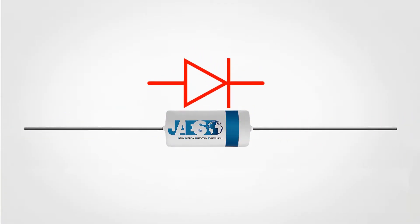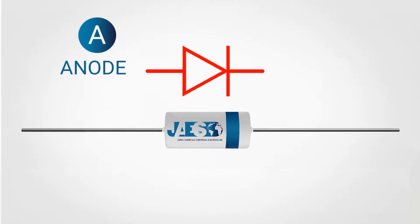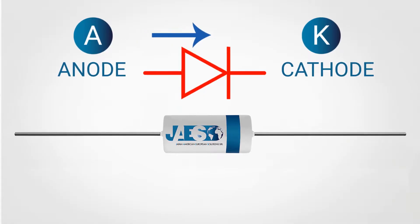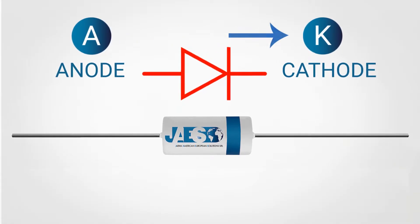The two diode terminals are called anode and cathode. The electric current conventionally goes from the anode to the cathode following this direction.